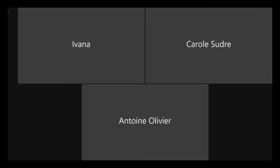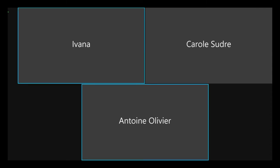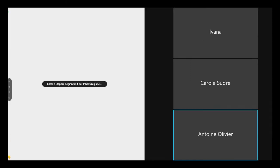Thank you to the committee for organizing this event and letting us present this work, which is in collaboration with Caroline Renault. My name is Antoine, and I'm with Philips Research in Paris. This paper deals with imbalance in the dataset in object detection problems, and we apply a method to a fetal anatomy detection problem.